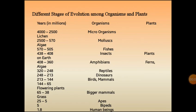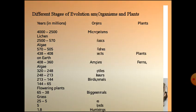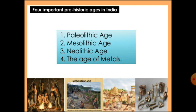Students, till here we have seen the different stages of evolution among organisms and plants. Now we shall go further. There are three different stages in the prehistoric period: Paleolithic, Mesolithic, and Neolithic. These are the ages of history we need to learn in detail — what is the Paleolithic age, the Mesolithic age, and the Neolithic age.